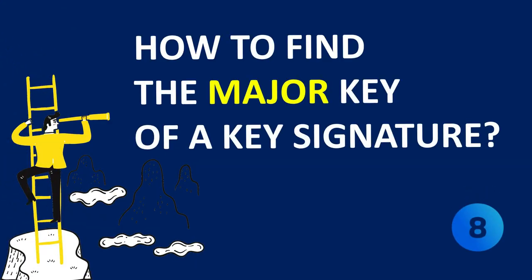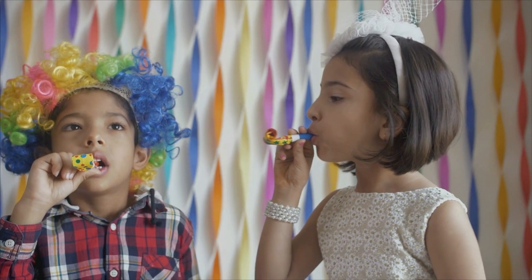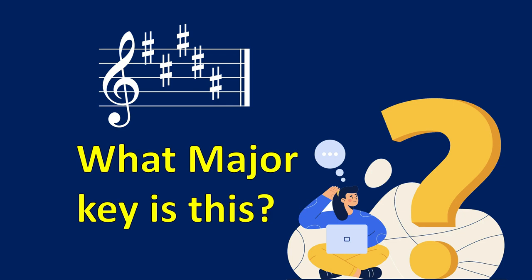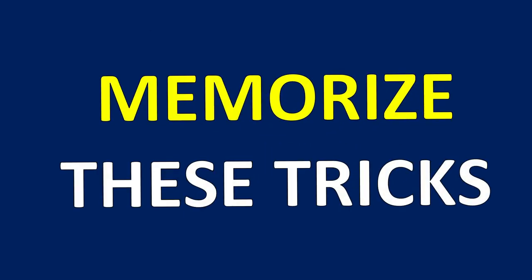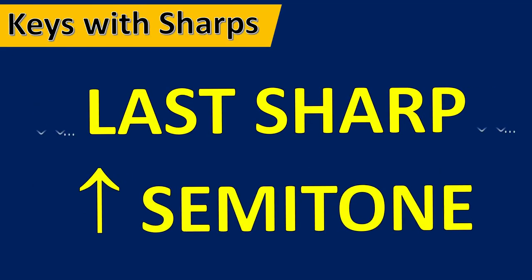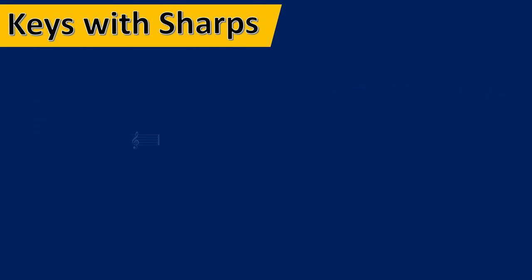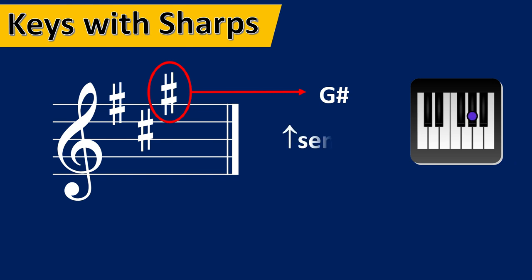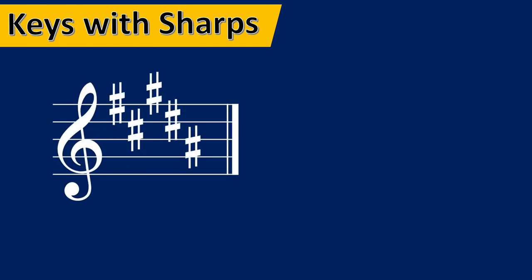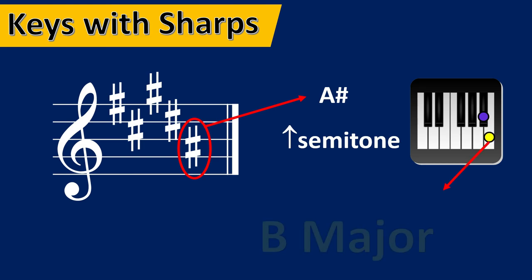How to find the major key of a key signature? The trick for key signatures with sharps: look at the last sharp and raise it one semitone. If we have three sharps — F, C, and G — we take the last sharp G, raise it a semitone, and get A major. With five sharps — F, C, G, D, and A — the last sharp is A; raise it a semitone and get B major. This trick only works for key signatures with sharps.